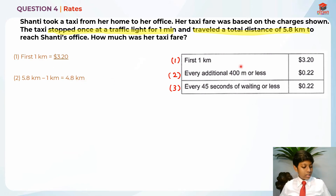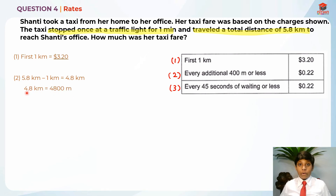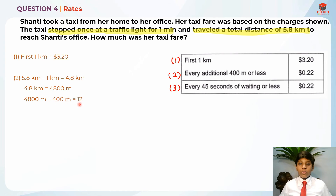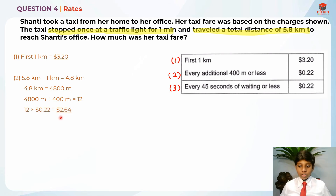Since the charge is per 400 meters or less, I'll convert 4.8 kilometers into meters: 4.8 × 1000 = 4800 meters. Then I take 4800 ÷ 400 = 12 intervals. To find the cost, I take 12 × 22 cents = $2.64. I'm underlining this so I can add it with parts one and three.